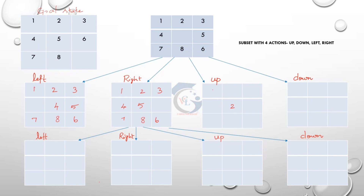Blank space on the right side, 2 in the middle: 1, 3, 4, 5, 7, 8, and 6. Blank space on the right side, middle 8: 1, 2, 3, 4, 5, 7, then 6. Now fill — find out.